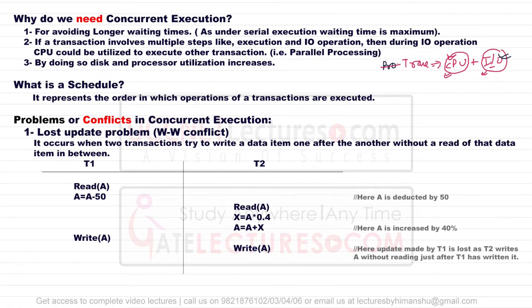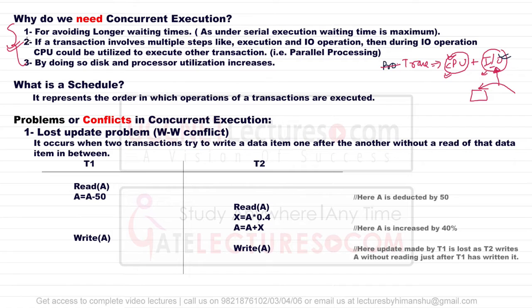Because a transaction involves multiple steps, if the CPU transaction is doing input/output, simultaneously we can bring another process inside the CPU to execute. By doing concurrent execution, we increase both CPU utilization and disk utilization. This is the reason why we use concurrent execution.